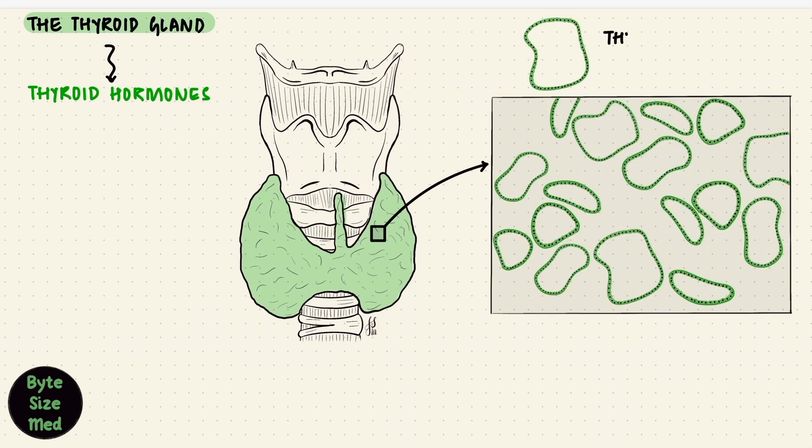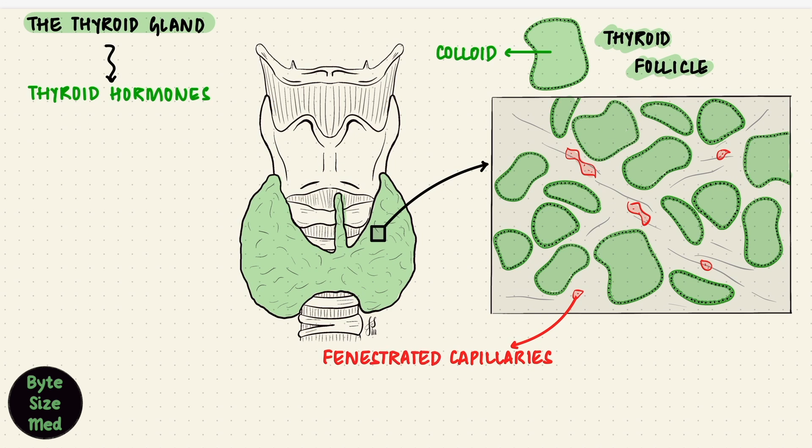These thyroid follicles are lined by epithelium and filled with colloid. The gland is divided into lobules by septa, consisting of connective tissue with nerves, lymphatics, and importantly, blood vessels. The capillaries here are fenestrated, and that's how the hormones synthesized reach systemic circulation.